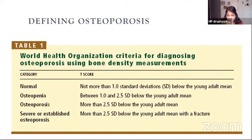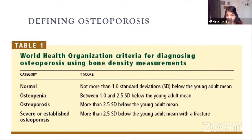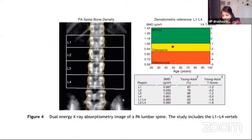The WHO — Dr. Kanis particularly — has given us this framework: normal is up to minus 1; osteopenia is between minus 1 and minus 2.5; osteoporosis is anything more than minus 2.5; and severe or established osteoporosis is this with a fracture. Typically, two sites are checked. We look at the lumbar spine, L1 to L4. Some people have an extra vertebra at L5, but we measure L1 to L4.